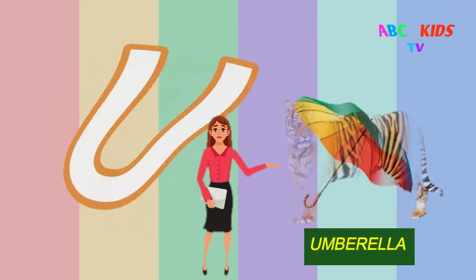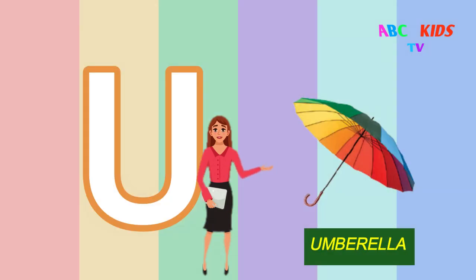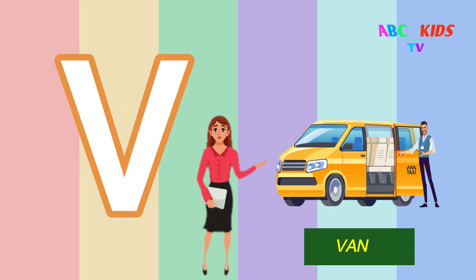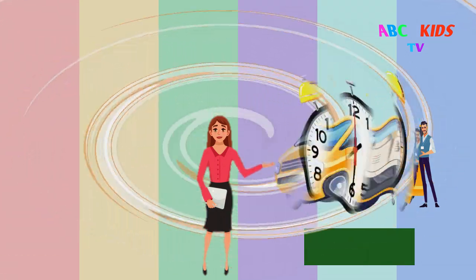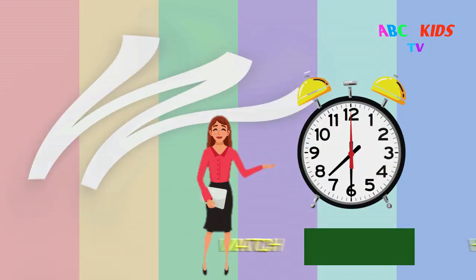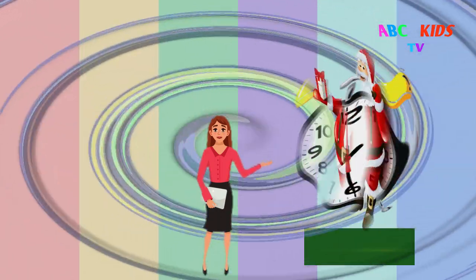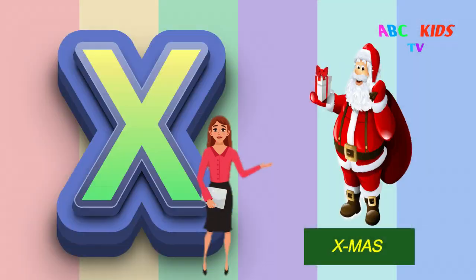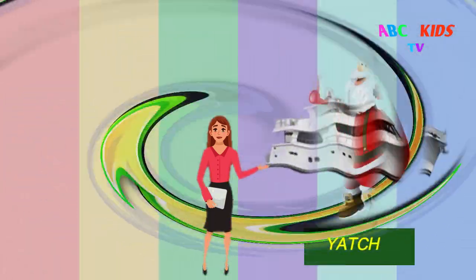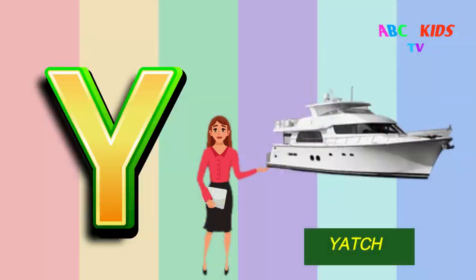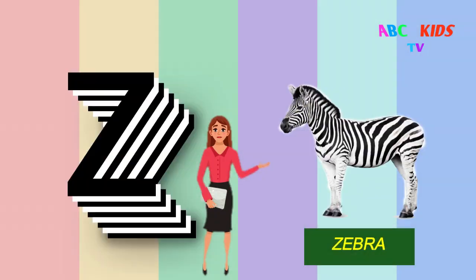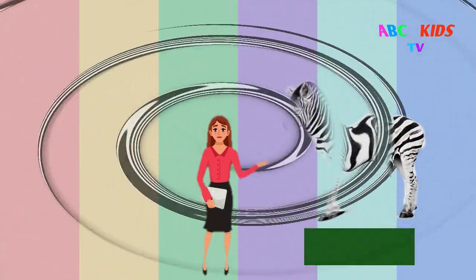U for umbrella, V for wain, W for watch, X for Christmas, Y for yaach, Z for zebra.